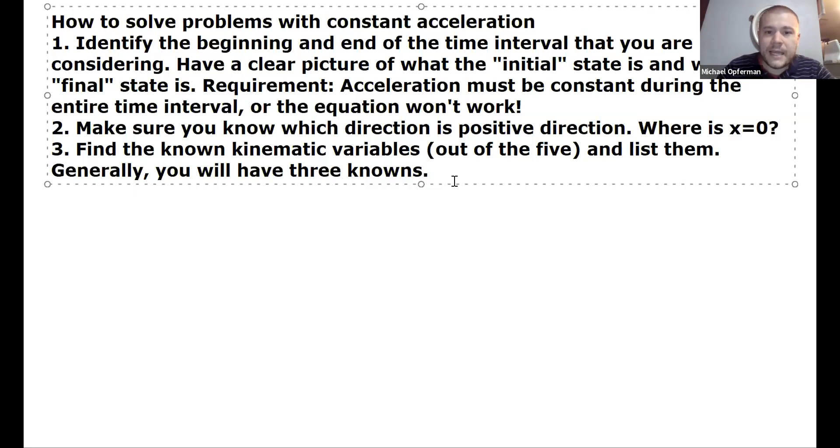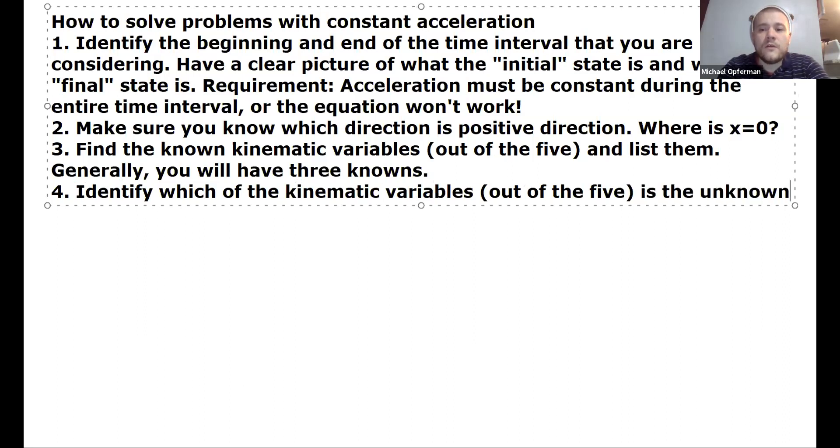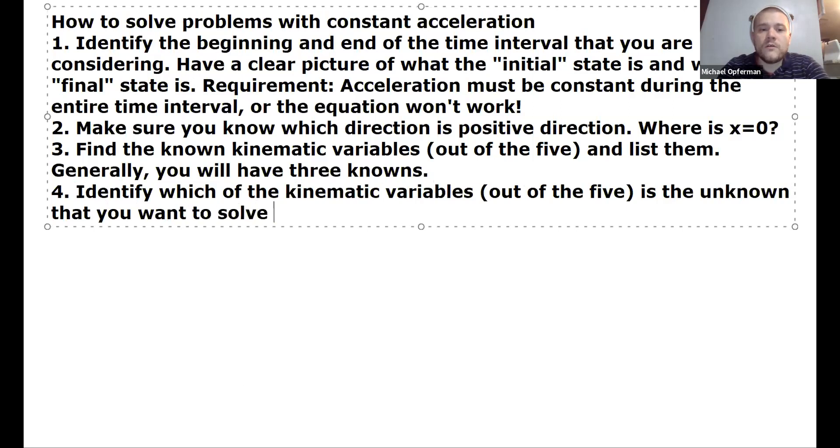And then the second half of this step, you want to also identify which of the kinematic variables out of the five standard variables is the unknown that you want to solve for. So, when I say the unknown here, there's generally two variables that are unknown in these problems. But one of them is usually something that's unknown and you want to solve for. The other one might be something that's unknown, but who cares? It's not going to do you any good to solve for it. So you want to identify which of the unknowns is actually the one you're trying to solve for.